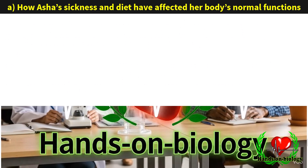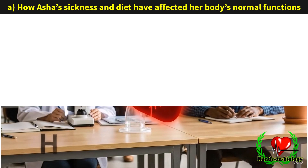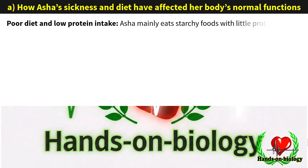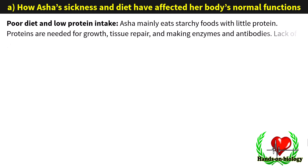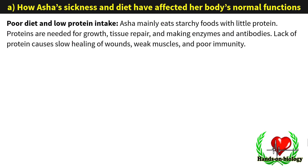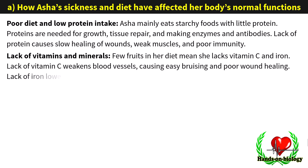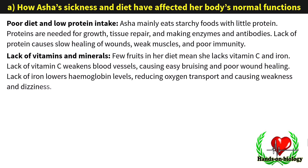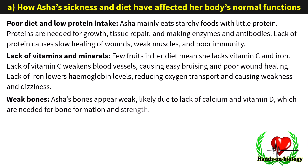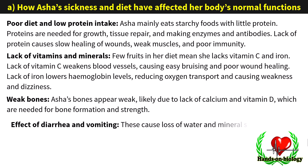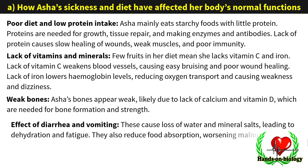How Asha's sickness and diet have affected her body's normal functions: poor diet and low protein intake — Asha mainly eats starchy foods with little protein; proteins are needed for growth, tissue repair, and making enzymes and antibodies; lack of protein causes slow healing of wounds, weak muscles, and poor immunity. Lack of vitamins and minerals — few fruits in her diet means she lacks vitamin C and iron; lack of vitamin C weakens blood vessels, causing easy bruising and poor wound healing; lack of iron lowers hemoglobin levels, reducing oxygen transport and causing weakness and dizziness. Asha's bones appear weak, likely due to a lack of calcium and vitamin D. Diarrhea and vomiting cause loss of water and mineral salts, leading to dehydration and fatigue, and also reduce nutrient absorption, worsening malnutrition.